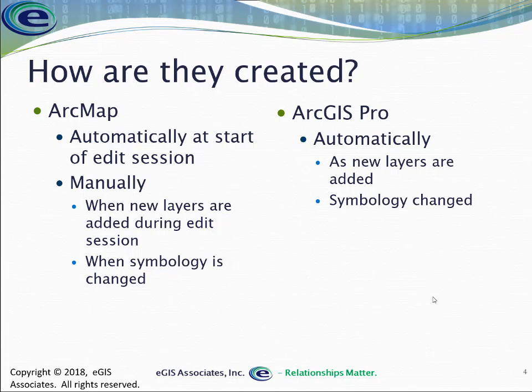So where do these feature templates come from? In ArcMap, when you start an edit session for the first time, it automatically looks at all editable layers in your map document and generates feature templates for each. If you add a new layer mid-session or change symbology — say from single symbol to categorical — you'll have to manually create the matching feature templates. In ArcGIS Pro, it's much easier because it's all done automatically: as you add new layers or change symbology, templates are automatically created.